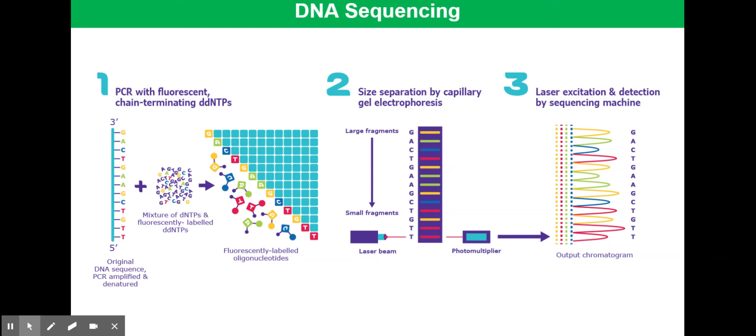In 1984, scientists sequenced the 170 kilobase pair-long genome of the Epstein-Barr virus. In 1995, the genome of the bacterium Haemophilus influenzae was sequenced using this approach.